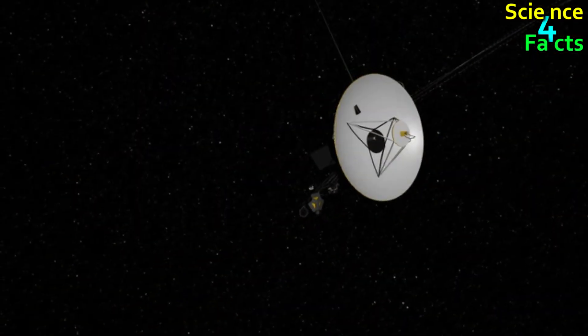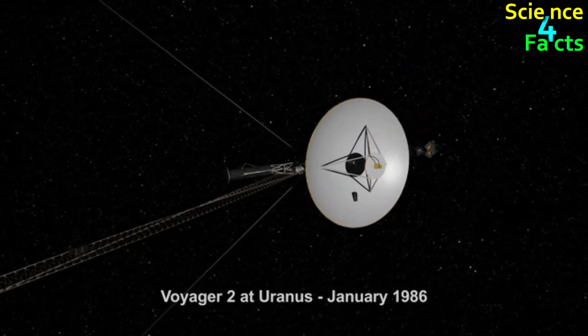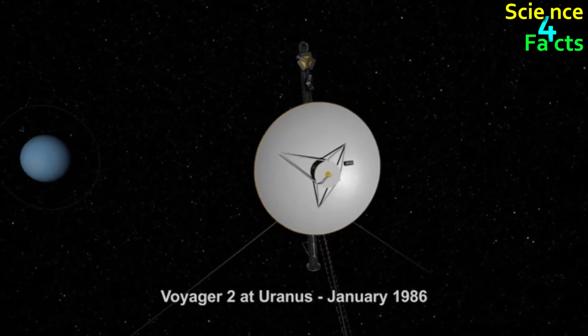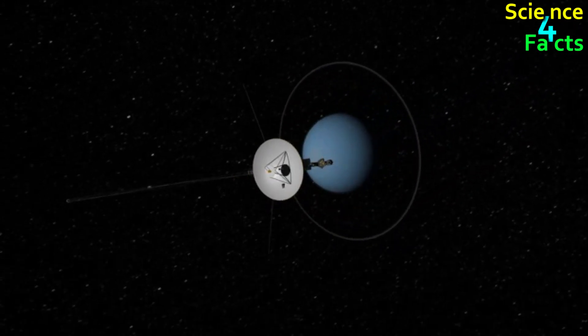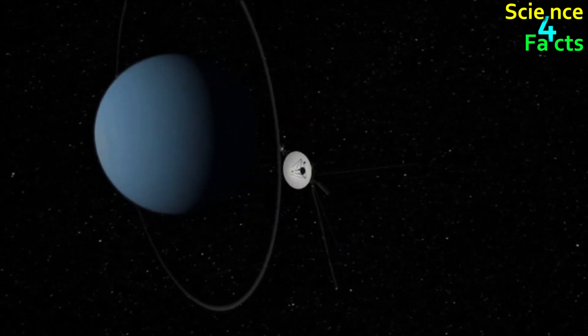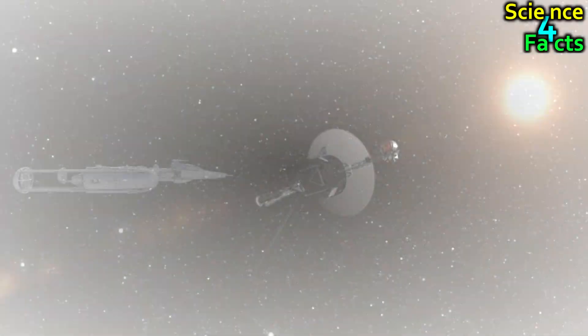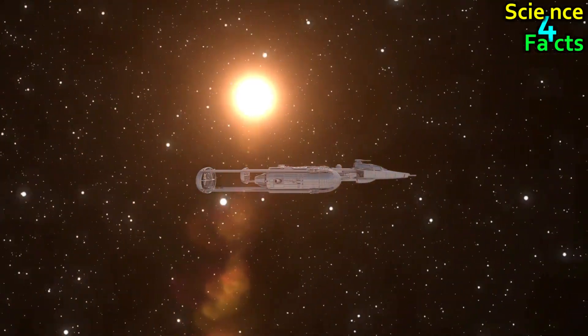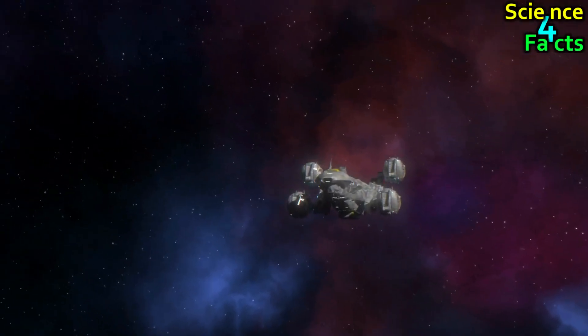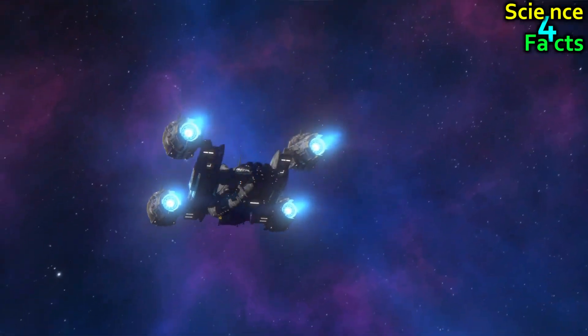Despite these challenges, there have been a few missions that have flown by or studied Uranus from a distance, including the Voyager 2 mission in 1986, which provided valuable information about the planet's atmosphere, rings, and moons. However, due to the difficulty and cost of mounting a mission to Uranus, there are currently no plans for any new missions to the planet in the near future. That being said, there is ongoing research and study of the data gathered by past missions to Uranus, and advancements in technology and space exploration may make future missions to the planet more feasible.